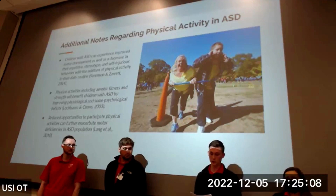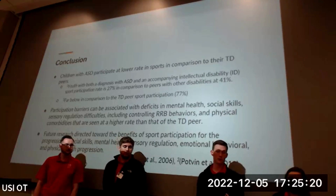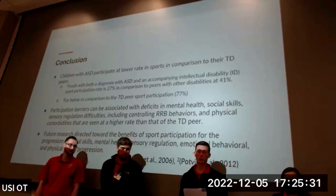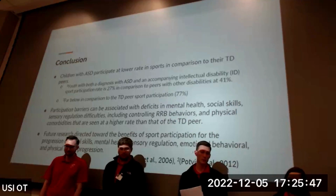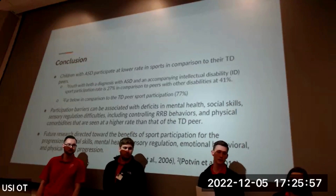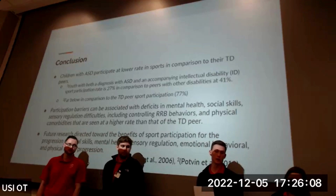In conclusion, children with ASD participate in sports at significantly lower rates than their developmentally typical peers. Youth with both ASD and an intellectual disability have a sport participation rate of only 27%, compared to 41% for peers with other forms of disabilities, and 77% for typically developing peers. Reduced participation is associated with deficits in mental health, social skills, sensory regulation, RRB behaviors, and physical comorbidities. Future research should be directed toward the benefits of sports participation for the progression of social skills, mental health, sensory regulation, emotional behavior, and physical health in this population.